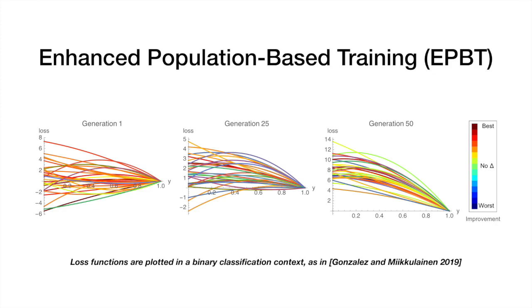we can observe qualitative differences in the best performing loss functions over time. Namely, loss function slopes have a tendency to become more negative over time.